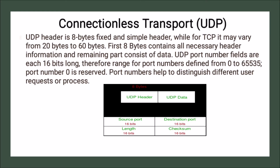Now let us look at the UDP datagram. The UDP header is 8 bytes fixed and simple, while for TCP it may vary from 20 bytes to 60 bytes. The first 8 bytes contain all necessary header information and the remaining part consists of data. UDP port number fields are each 16 bits long — source port, destination port, length, and checksum are all 16 bits.